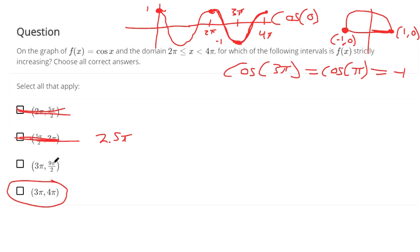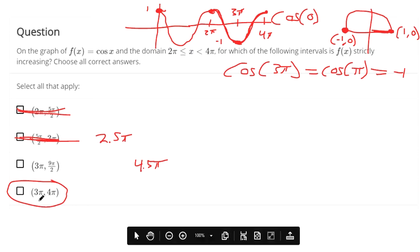And then 3 pi, 9 pi over 2. 9 pi over 2, that's 4.5 pi. We can't select this one because 9 pi over 2 is outside of our domain. So this is the only correct option.